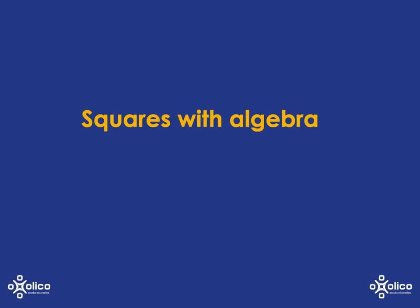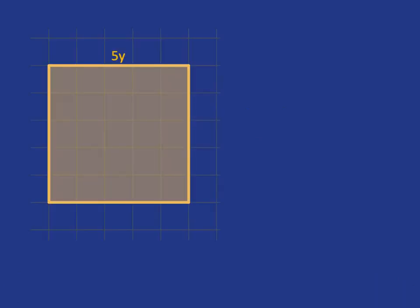We're now going to add a little algebra into dealing with squares. For example, if we have a square like this one, and the length of the side of the square is 5y, what will the area of the square be?